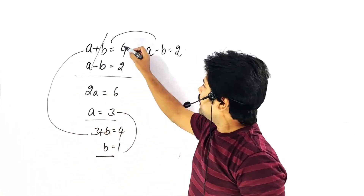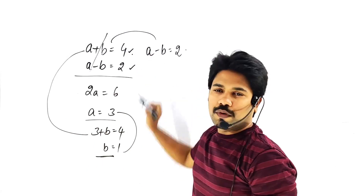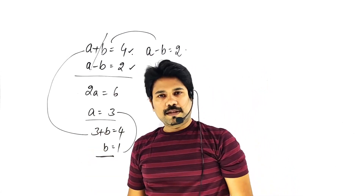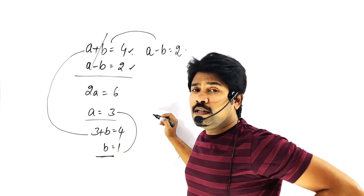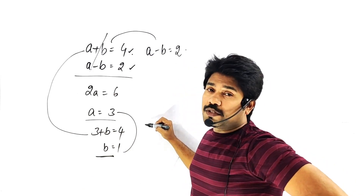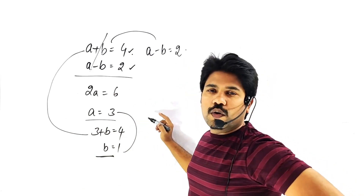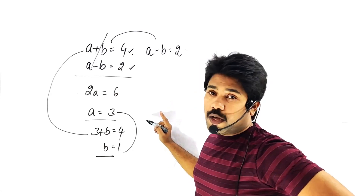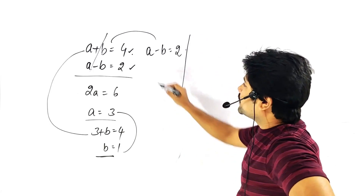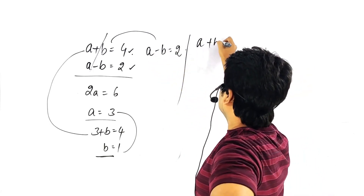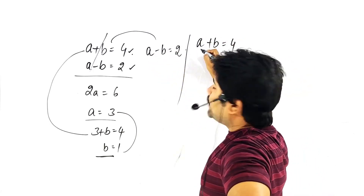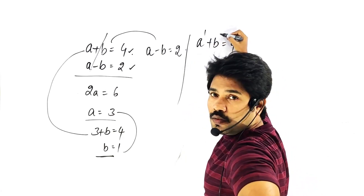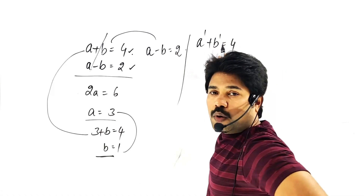Now a plus b is 4 and a minus b is 2 — you are limiting the values of a and b to single values. Because in these equations a has power 1 and b has power 1, and maximum power 1 means maximum 1 root.